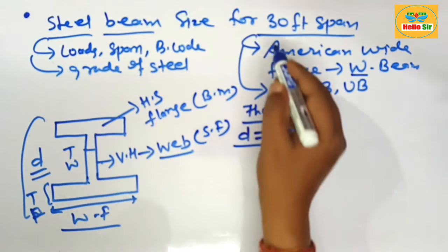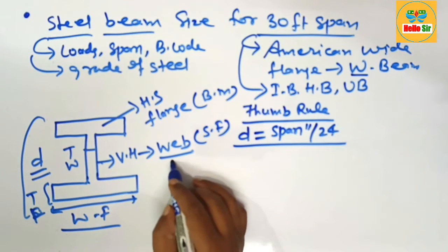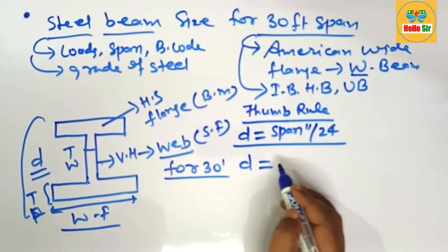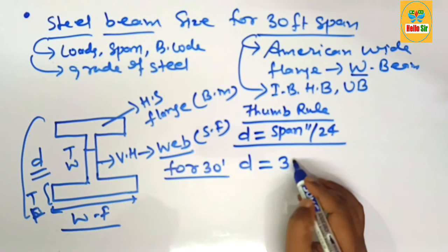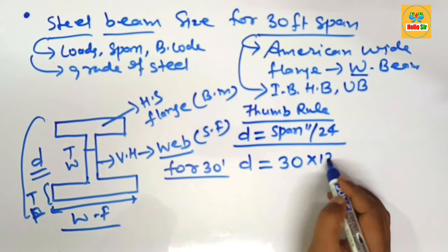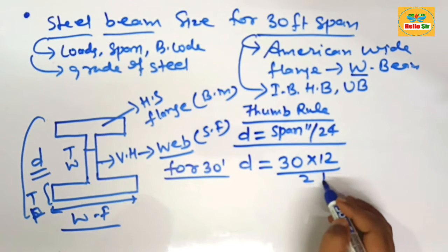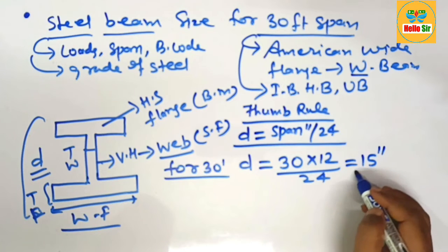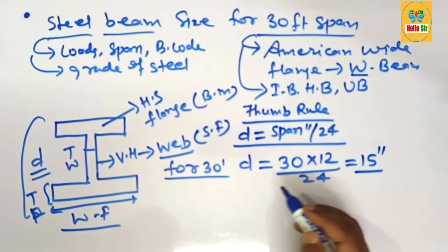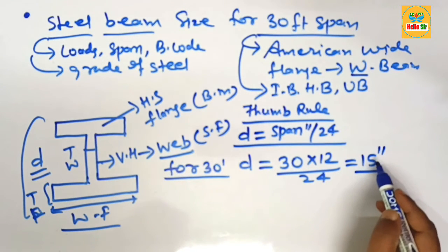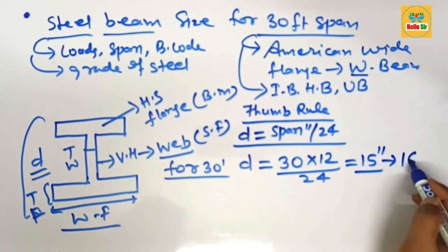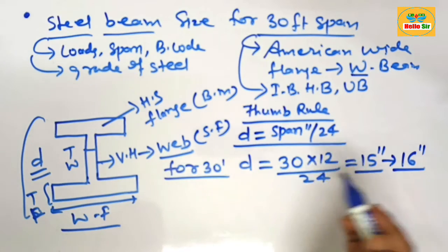The depth of steel beam should be: divide your span in inches by 24. This is thumb rule, remember this one. For 30 foot span, what are the depth? Just multiply 30 by 12 and divide this one by 24. This will come approximately 15 inches depth of steel beam, but 15 inches steel beam not coming, that's why we use 16 inches depth of the beam.